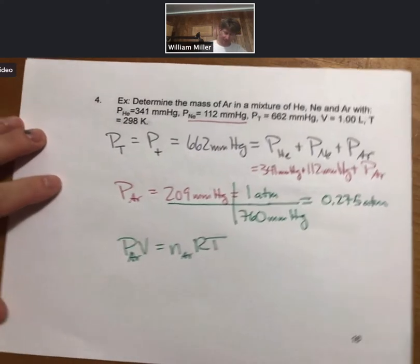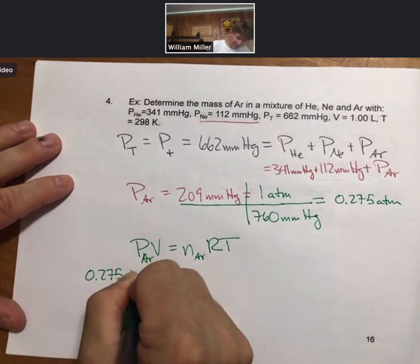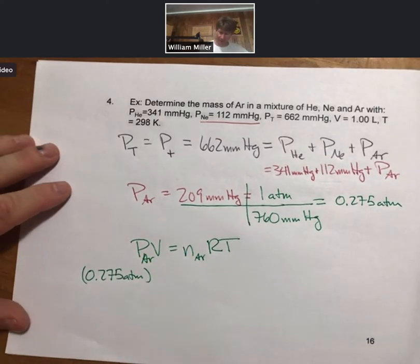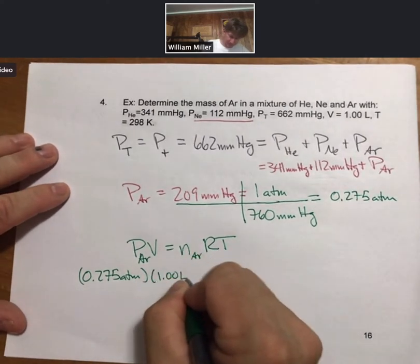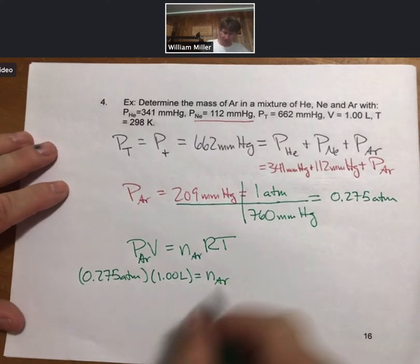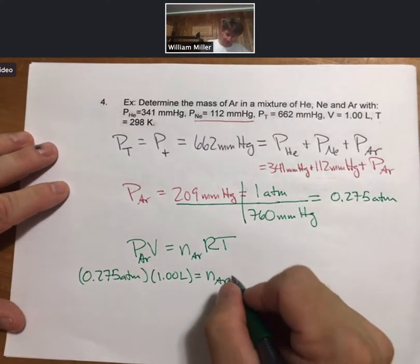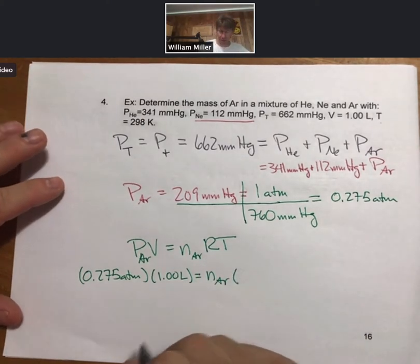And I'm going to be writing an ideal gas law for argon. Partial pressure of argon times volume equals moles of argon times RT. Like I said, I like to plug all my numbers in. I've got my 0.275 atmospheres. I've got my volume of 1 liter. I don't know my moles. I have my temperature and I have my R. Let me write my R first, 0.08206.